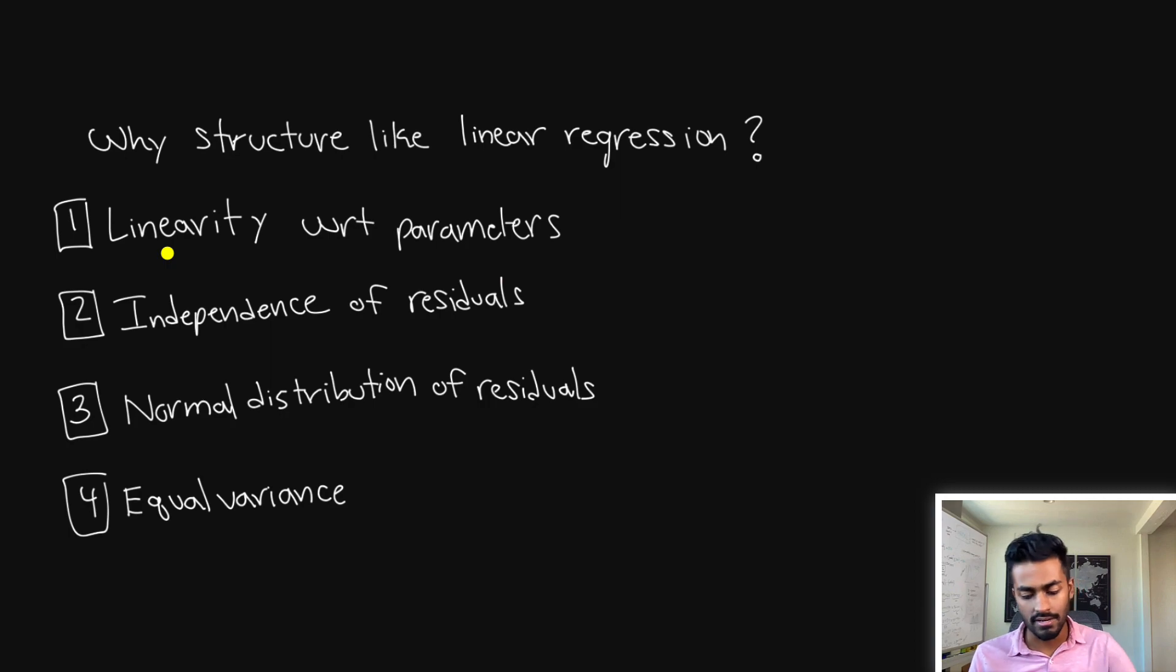But logistic regression, on the other hand, has no known closed form solution. And this is primarily because with logistic regression, we are dealing with a sigmoid function, which when you take the derivatives of in the maximum likelihood estimation, you'll notice that they cannot be solved with simple linear algebra. And so we're going to have to resort to optimization techniques like gradient descent in order to solve for the parameters of logistic regression.